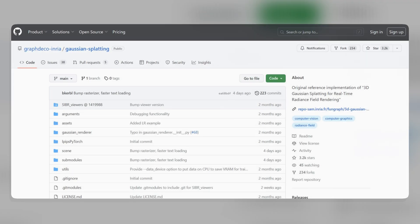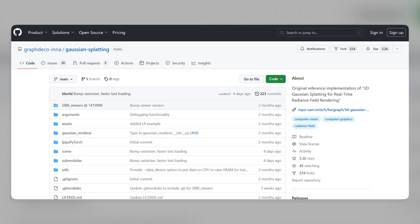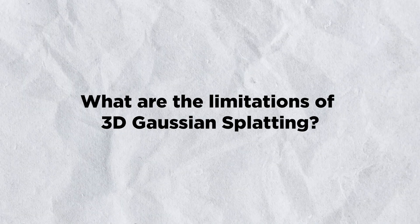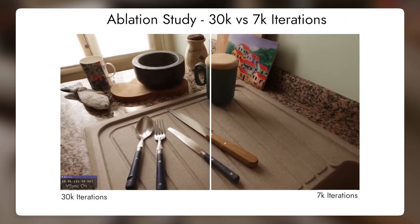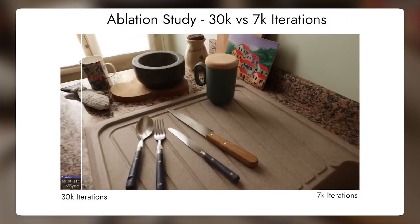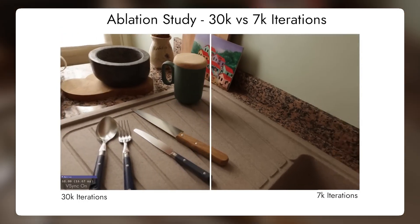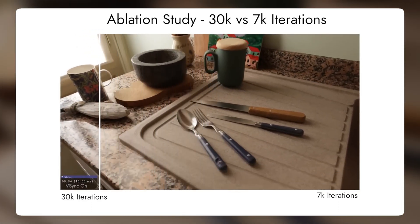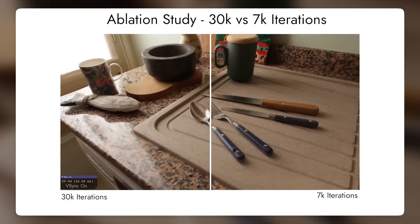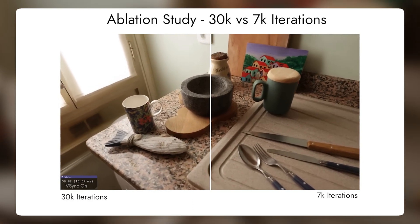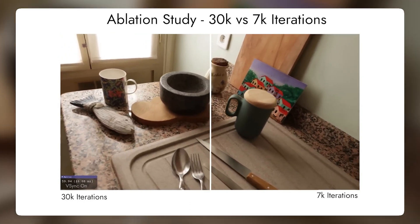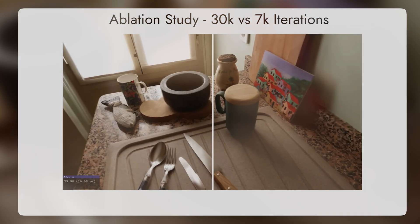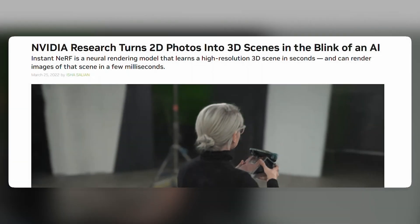Third, it is available as open source code on GitHub, so you can download and try it yourself. As for limitations: first, it requires multiple images or videos as input and cannot generate novel views from a single image. Second, it may not capture very fine details or thin structures, since it uses sparse points to represent the scene. Third, it may not work well for scenes with large occlusions or non-Lambertian surfaces, as it relies on multi-view stereo to compute the depth map.